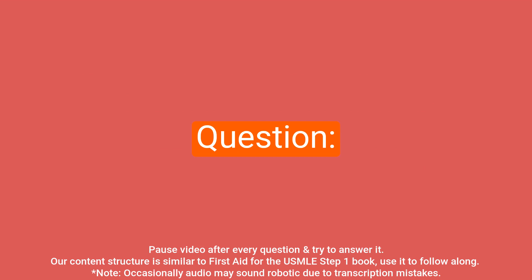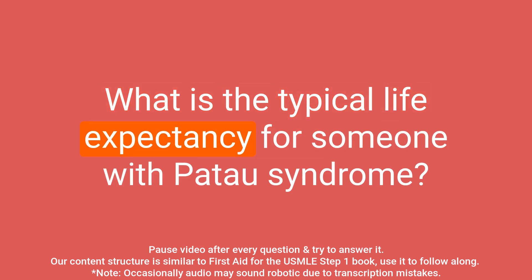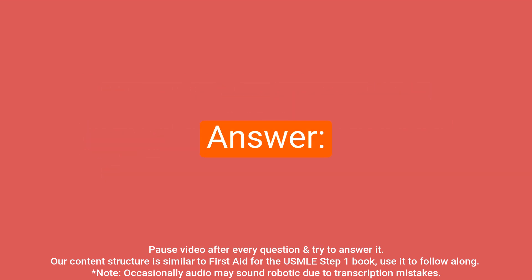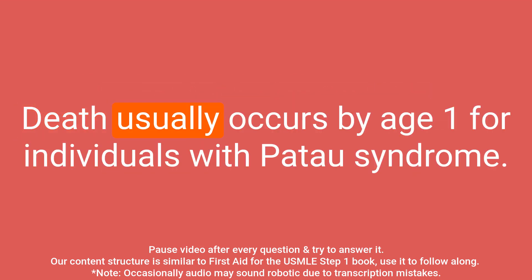Question: what is the typical life expectancy for someone with Patau syndrome? Answer: death usually occurs by age 1 for individuals with Patau syndrome.